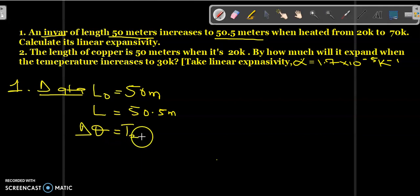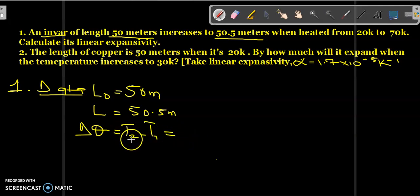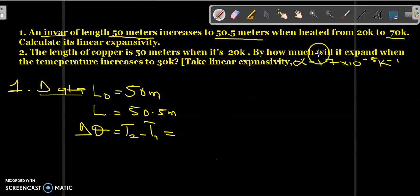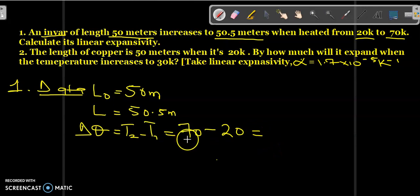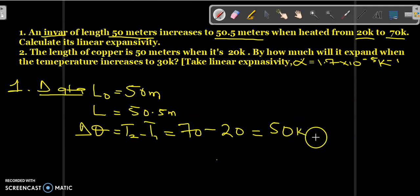We have a temperature difference: delta T equals T2 minus T1. T2 is 70 Kelvin and T1 is 20 Kelvin. So 70 minus 20 gives you 50 Kelvin, and this is our change in temperature.